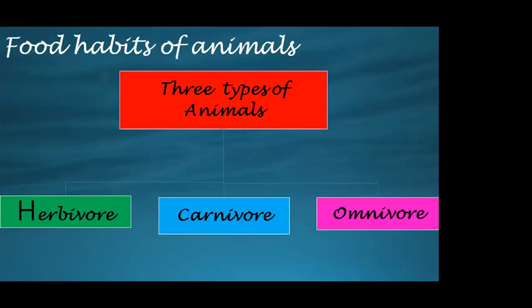The different kinds of animals based on different food habits are: Herbivores — these animals are plant eating animals. The second category are flesh eating animals — they kill other animals and feed on their flesh. The third category is omnivores — they feed both on plants and animal flesh. So now let's study them one by one.